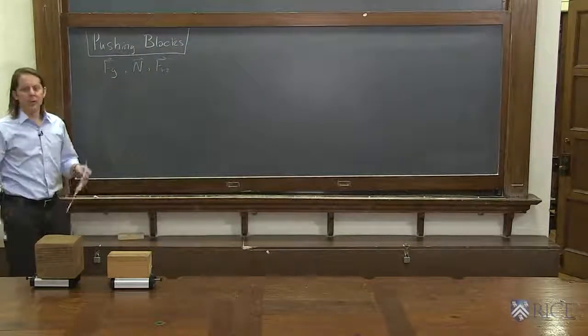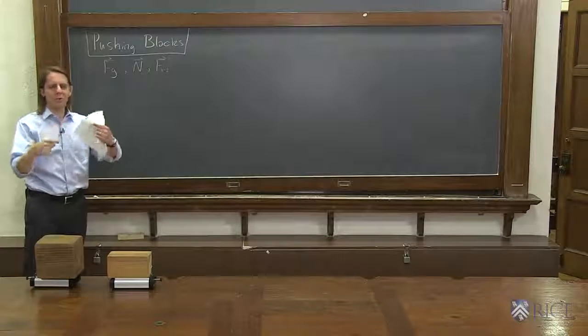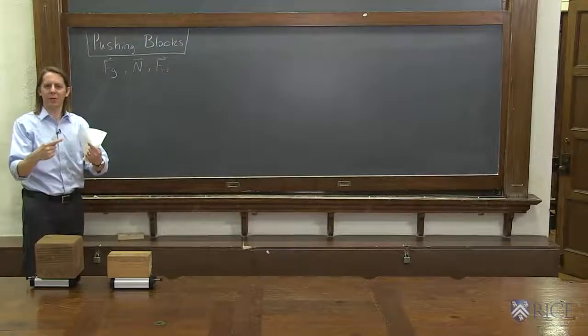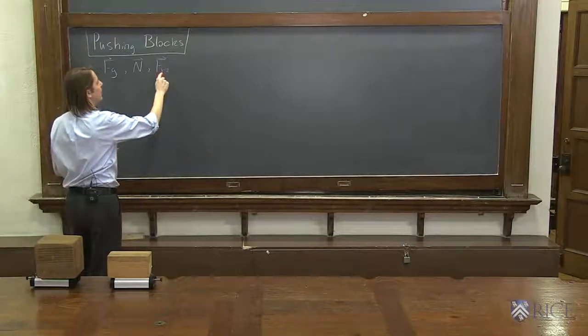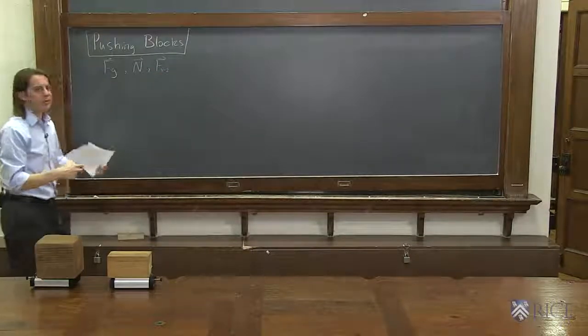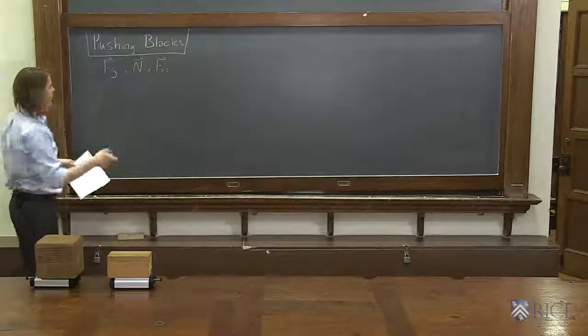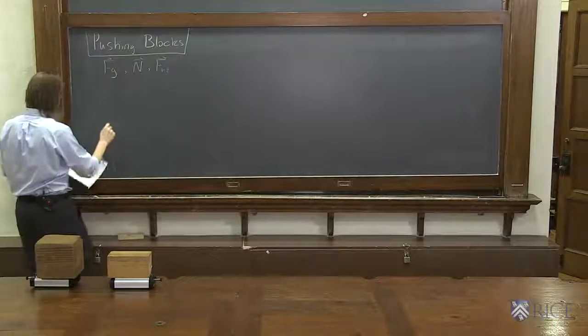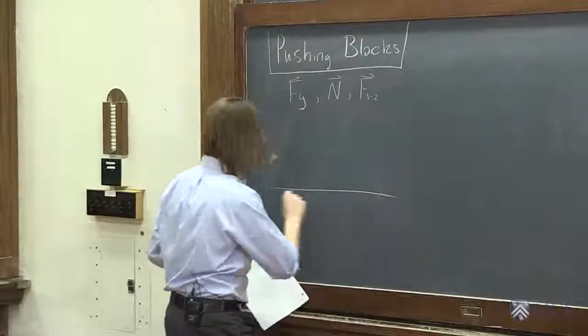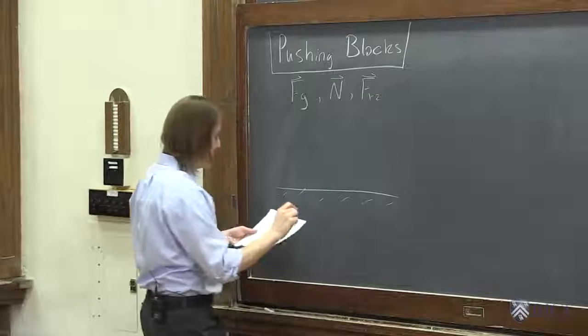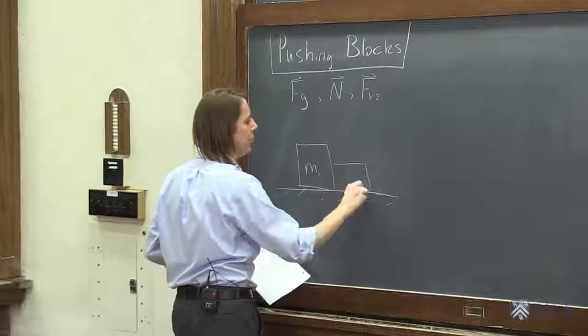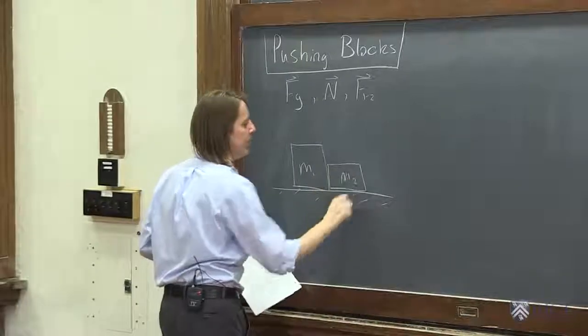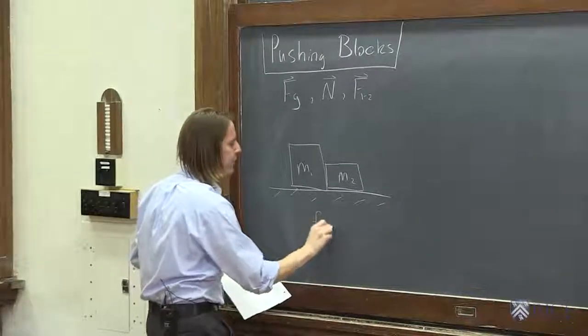Here I'll label it as F12. It really just means the forces of how two objects push on each other. It's kind of like a normal force, often called a contact force. So this would be the force that one object, object one, applies to object two. So we're going to do it with two blocks on a frictionless surface.